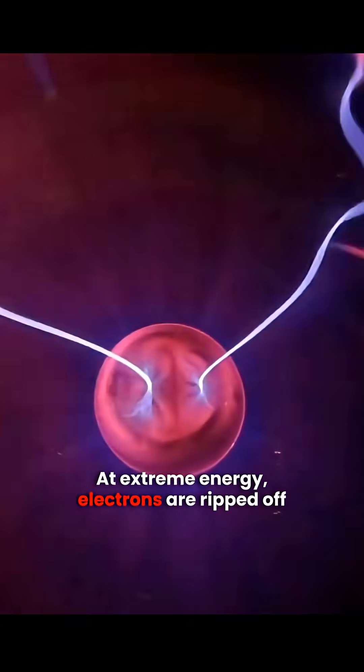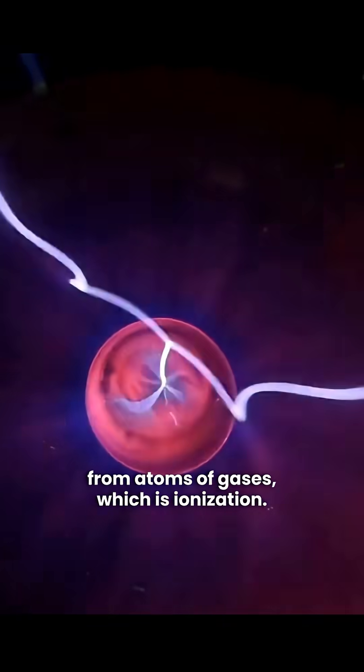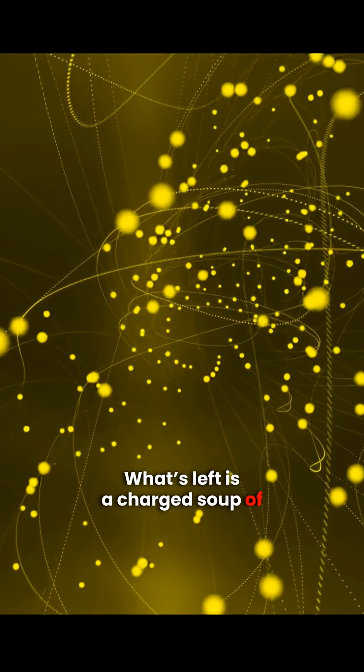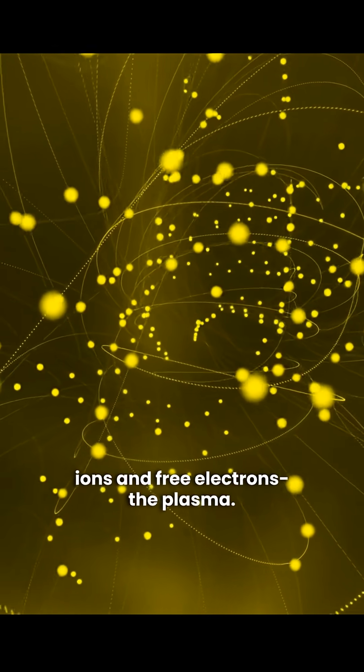At extreme energy, electrons are ripped off from atoms of gases, which is ionization. What's left is a charged soup of ions and free electrons - the plasma.